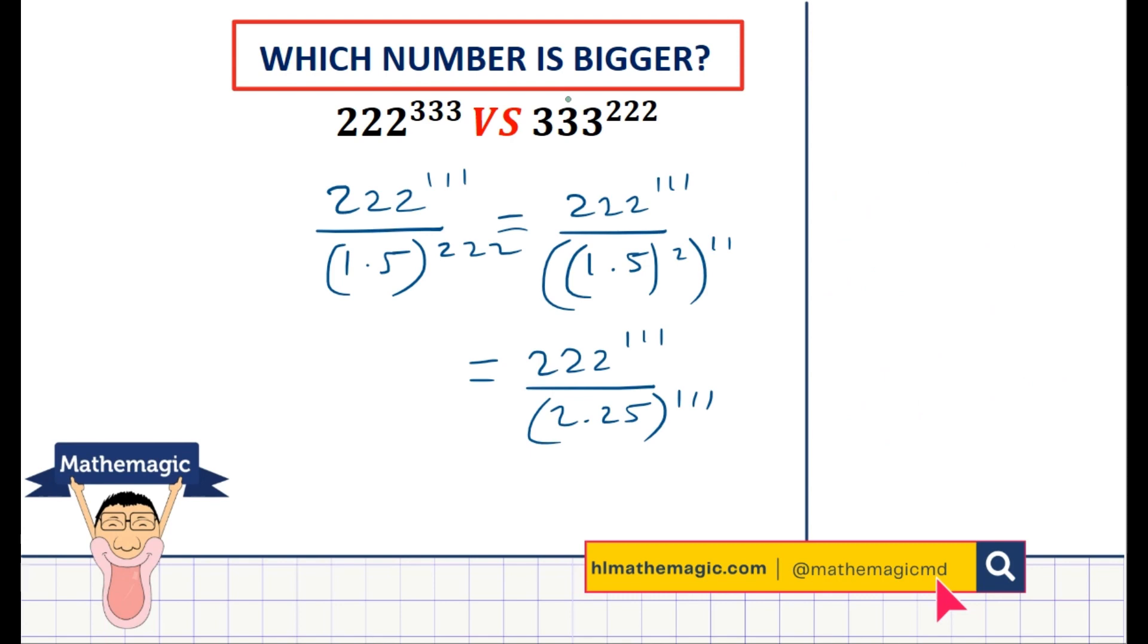Now another exponent law that we can use is that if we have a to the power b divided by c to the power b, we're allowed to combine those numbers and say that this is a over c to the same power, which is to the power b here. And this is useful here because it allows us to say that we have 222 over 2.25, all of that to the power 111.